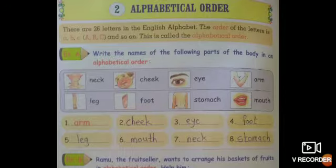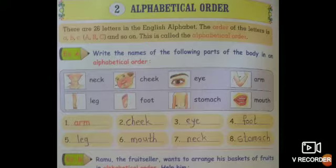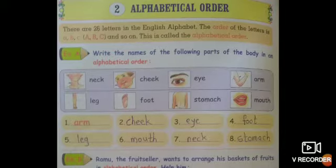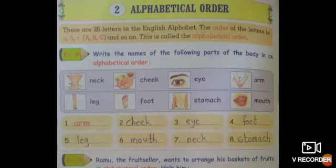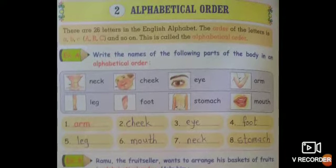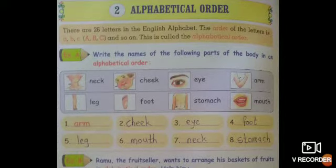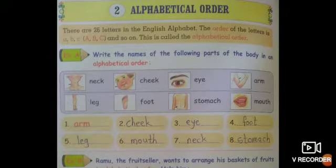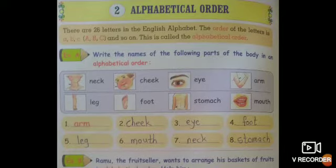We will find which body part starts with A. Arm starts with A, so Arm is written at number one. After A comes B — is there any body part starting with B? No, so we move to the next letter, C. The body part beginning with C is Cheek, so Cheek is written at number two.